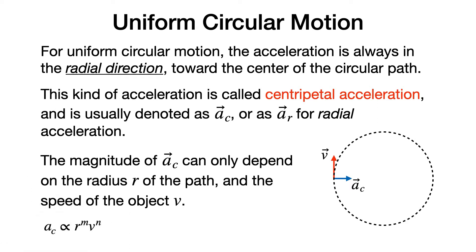Let's use dimensional analysis to determine what the equation for the centripetal acceleration must be. The centripetal acceleration will be proportional to the radius r to some power m, times the speed of the object v to some other power n. Acceleration has units of length per time squared, and this equals length to the m times the units of velocity, which are length to the n over time to the n.